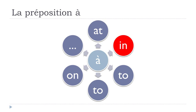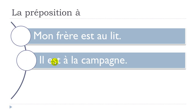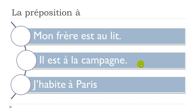Now let's see the second category: the 'in' concept. First example: 'Mon frère est au lit' — my brother is in bed. Second example: 'Il est à la campagne' — he is in the countryside. And the last one, if you want to introduce a town using 'habiter' (to live): 'J'habite à Paris'. So: 'Mon frère est au lit', 'Il est à la campagne', 'J'habite à Paris'.